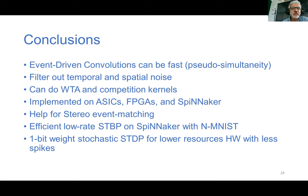In conclusion, event-driven convolutions can be very fast, filter out temporal and spatial noise, support winner-take-all competition kernels, and have been demonstrated on ASICs, FPGAs, and SpiNNaker. They can be used for stereo matching and show efficient low spike rates with spatio-temporal backpropagation on SpiNNaker using the N-MNIST dataset. We also showed one-bit stochastic STDP for low hardware resource usage with fewer spikes. Thank you very much.